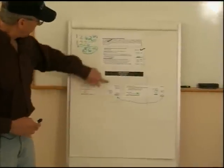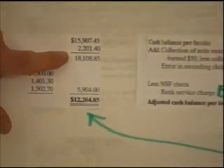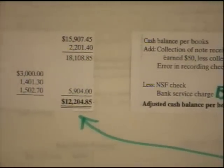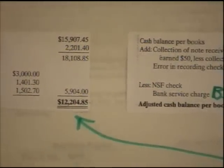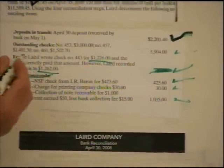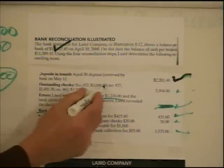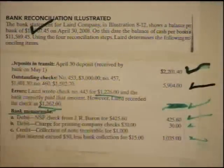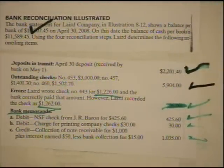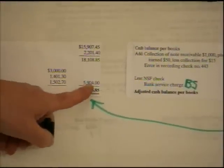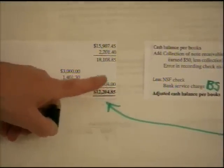After we take the balance per bank and add the deposit in transit, the next thing we do is subtract out the outstanding checks. That total was given right here — here are our outstanding checks. Generally they'll either list them out and you have to total them, or they'll just give you a total that says outstanding checks $5,904. They listed them out here, but we didn't need to; we could have just put the total and subtracted.